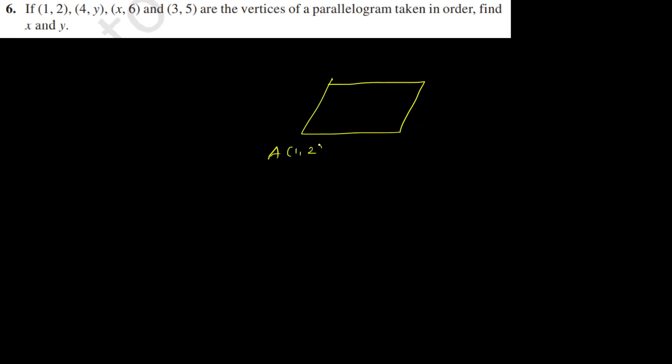Let's assume A as (1,2), B as (4,y), C as (x,6), and D as (3,5). Since it was given that they are vertices of the parallelogram, we have to find x and y.